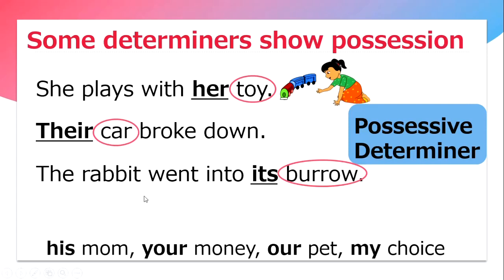The other examples are: his mom, your money, our pet, my choice. These are the examples of possessive determiners.